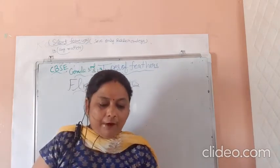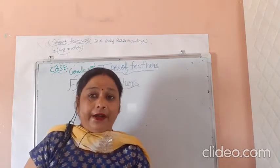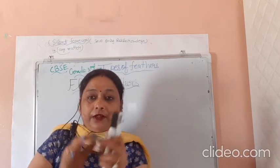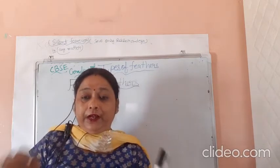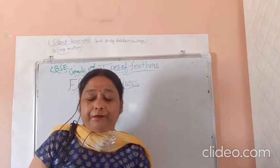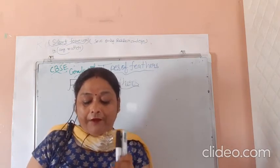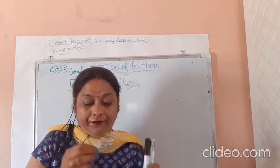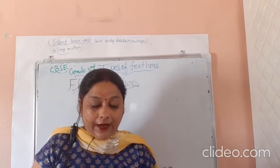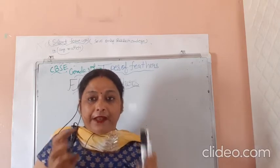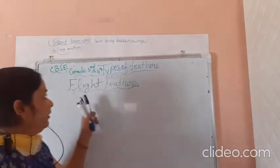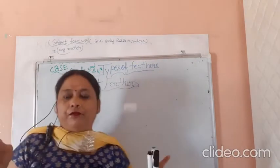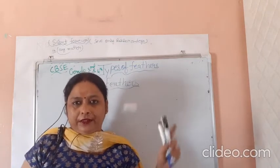Firstly, know about feeders. You already know feeders — a bird's body is covered with feathers. Different birds have feathers of different colors. Birds have mainly three types of feathers: first, flight feathers; down feathers; and body feathers.